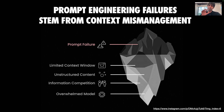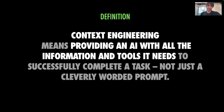A limited window means the AI can forget key details. Unstructured content can lead to confusion, competing information can distract it, and overload can overwhelm the model. So context mismanagement is one of the big root causes. So what exactly is context engineering? It means equipping an AI agent with everything it needs — the data, the tools, the history — to tackle a task effectively. Not just a clever prompt, but the full setup.